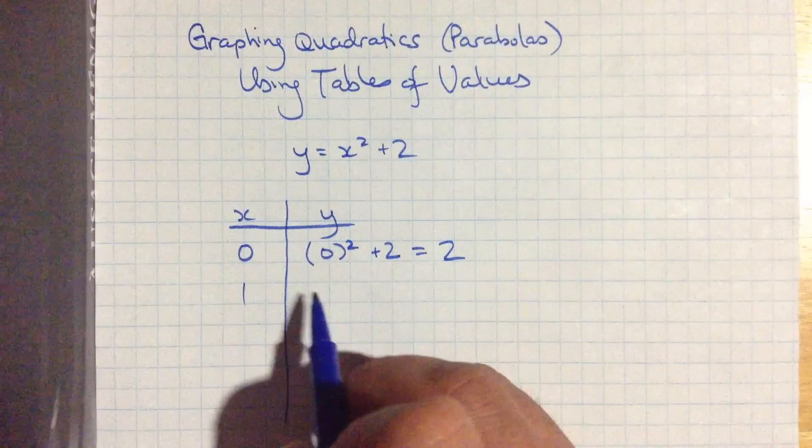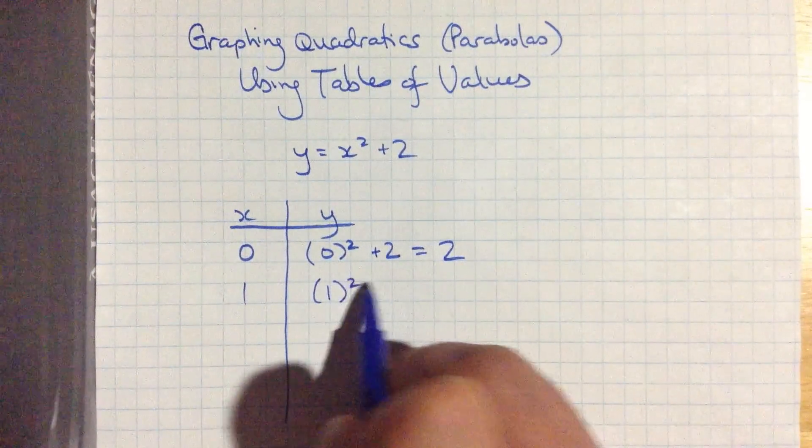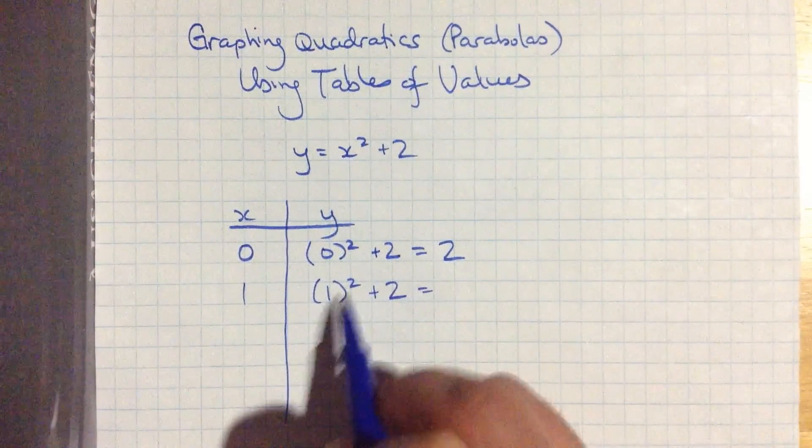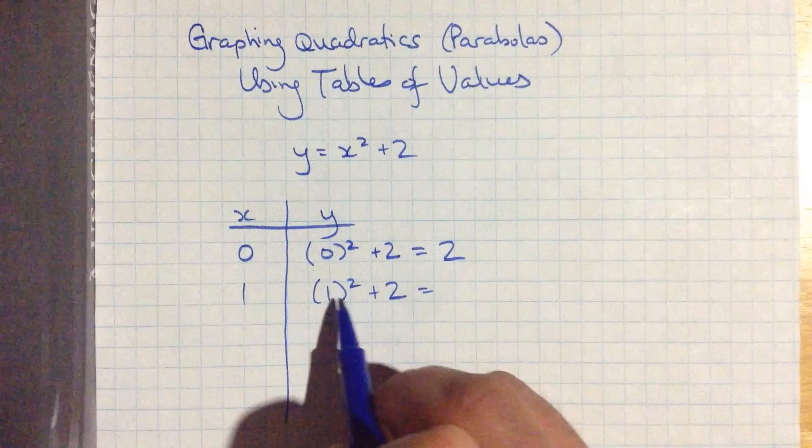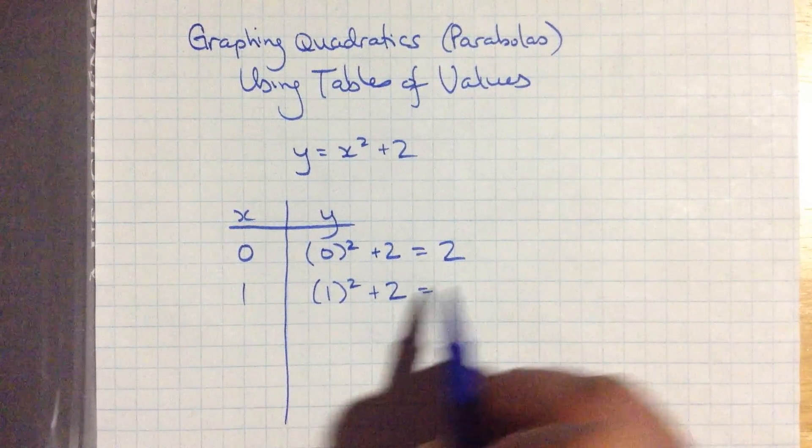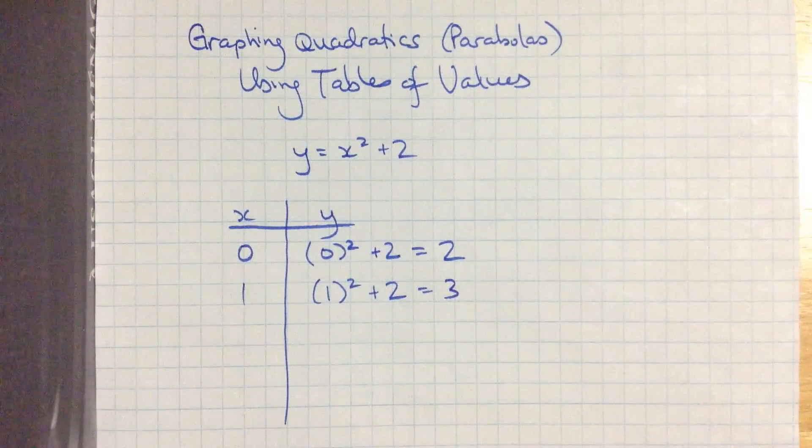Let's choose an x value of 1. That's a pretty close-by and easy one. 1 squared is 1, that's 1 times 1. 1 plus 2 is 3. So far so good.